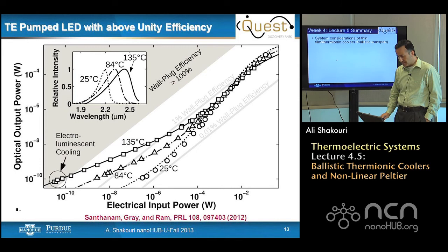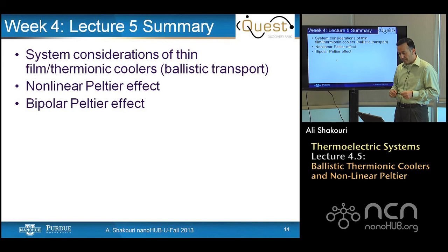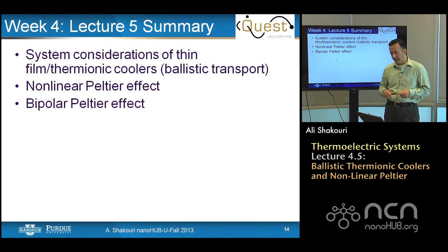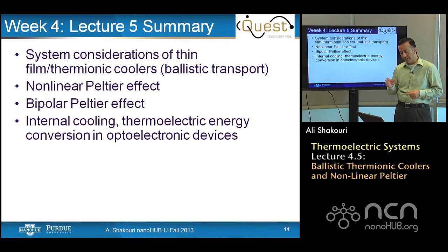Let me summarize this lecture. We considered system limitations for thin film thermionic coolers, discussed nonlinear Peltier and bipolar Peltier effects, and finally discussed that internal cooling could be used to make the junction in the P-N junction cooler than the surrounding and to improve the efficiency of light-emitting devices. In the next lecture, we will summarize what we learned in week four and all of the system considerations. I look forward to seeing you in lecture six.